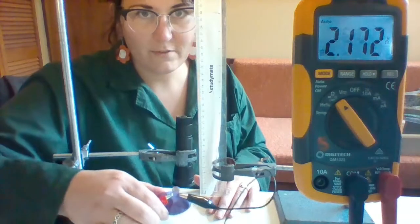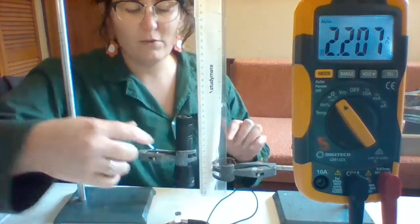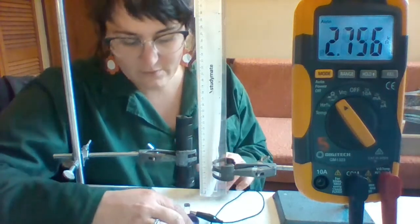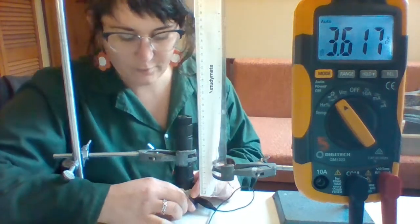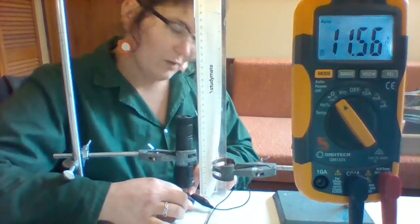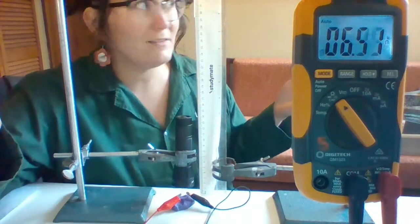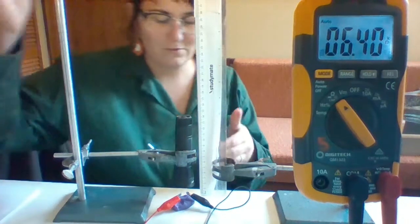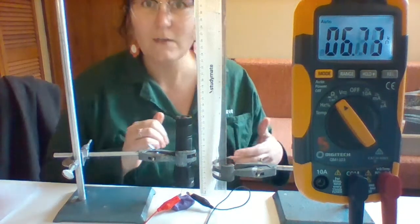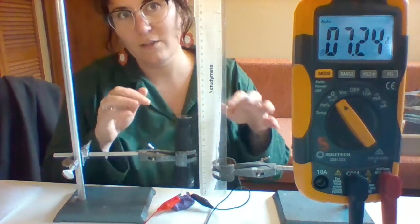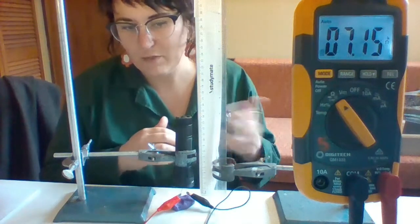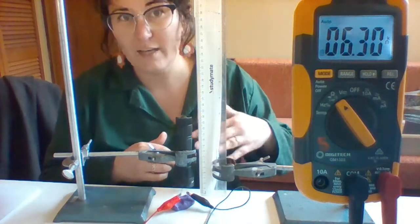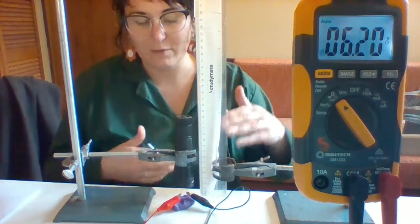So we're going to figure out the resistance of the LDR based on the amount of light I'm shining on it. This isn't completely foolproof because I'm in a room where there's light and this light source is not a scientific light source, it's just a really bright torch. But it's going to give you an idea of how to measure the resistance of an LDR and whether it goes up or down when the light is closer or further away.